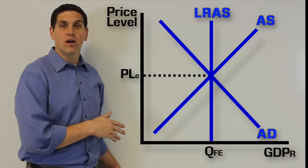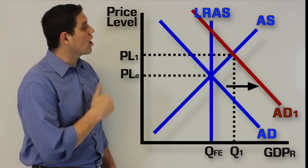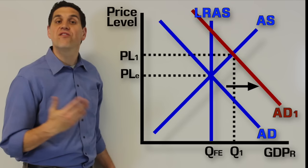What would happen if there's an increase in aggregate demand? Well, in the short run, our actual GDP would be beyond our potential GDP, and so we'd have an inflationary gap. Remember, this is the short run.